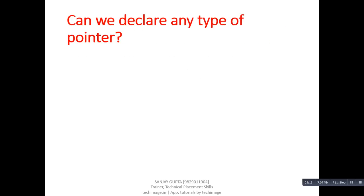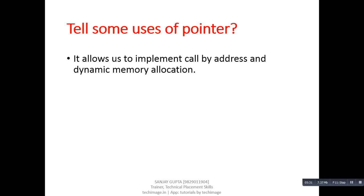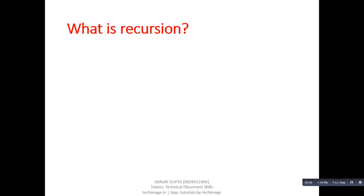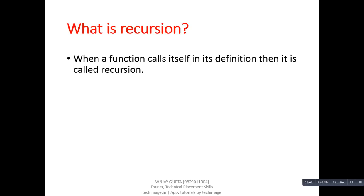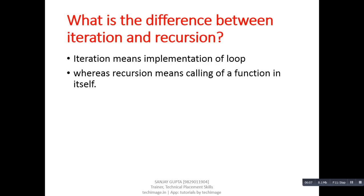Next question: can we declare any type of pointer? Answer: yes, we can declare any type of pointer. Next question: tell some uses of pointers. Answer: it allows us to implement call by address and dynamic memory allocation. Next question: what is recursion? Answer: when a function calls itself in its definition, it is called recursion. Next question: what is the difference between iteration and recursion? Answer: iteration means implementation of a loop, whereas recursion means calling of a function within itself. Thank you.